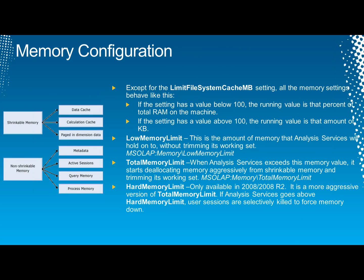Memory configuration is an important one. I'm going to talk a little bit about what these different types of memory do within analysis services. There are really two primary types: shrinkable and non-shrinkable memory. Shrinkable memory can essentially go away when analysis services is under duress from a memory perspective. Non-shrinkable memory cannot go away until analysis services is completely out of memory, which is that hard memory limit at the very bottom of the slide.